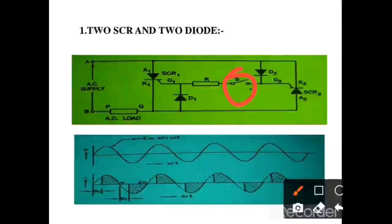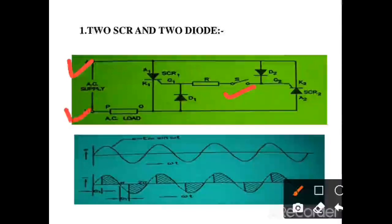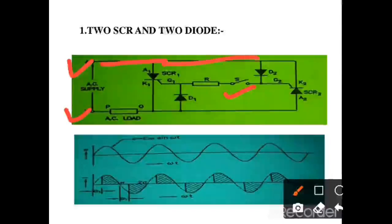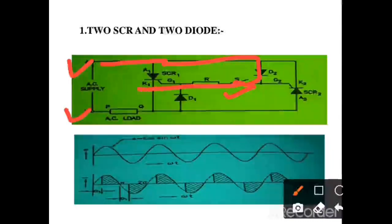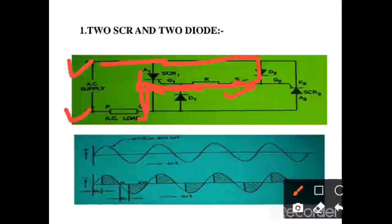In this circuit, when switch S is in the on condition and terminal A is positive with respect to terminal B, the control current flows from switch S through G1, then through cathode 1 and anode 1, then through Q, P, and back to B.